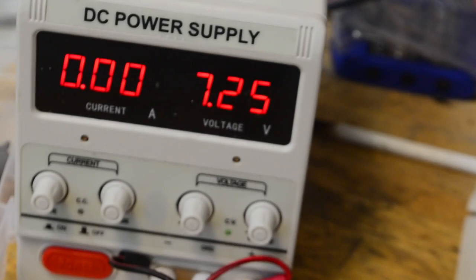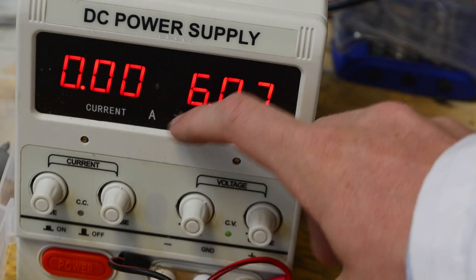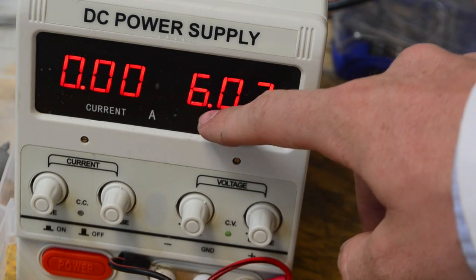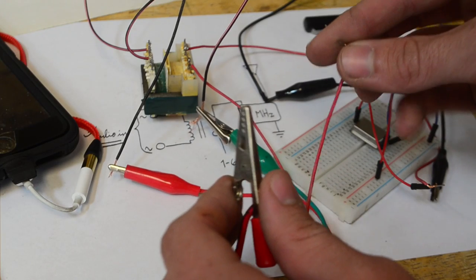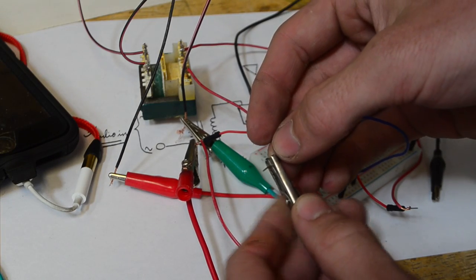For my power supply I'm going to be using this variable DC power supply that I have. However if you don't have one of these power supplies you can use around four double A batteries to get the six volts that I'm testing at. So now the positive of our power supply can be connected up to the positive rail and the negative can be connected up to the negative rail.